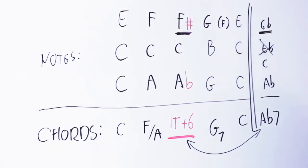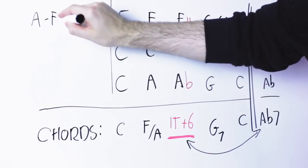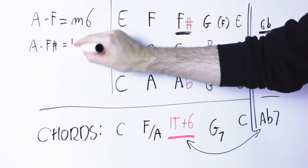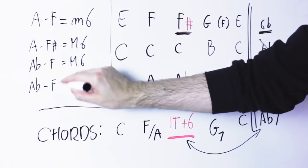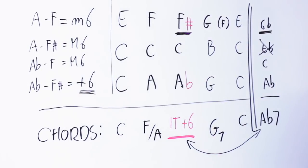I mean, A to F is a minor sixth. A to F sharp or A flat to F is a major sixth, A flat to F sharp is an augmented sixth. The names are important here because, as we have seen before, the seventh of a dominant chord resolves down. On this G7, the F note resolves down to the E note in the C chord. But here in the augmented sixth chord, that note, the F sharp, resolves up, not down.